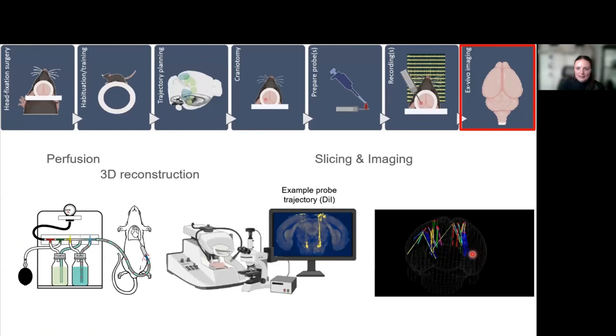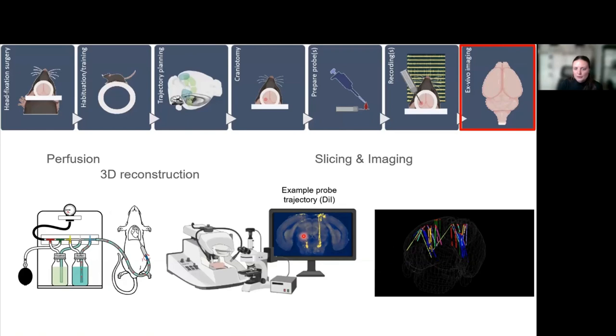There will be a lecture on this later. But after all your recordings are done, you basically perfuse the mouse, extract the brain, and you find back where your recordings were done by looking at where the probe tracks are. This was it. The resources are also here, but these will be online. I think that was it for me.